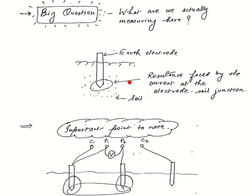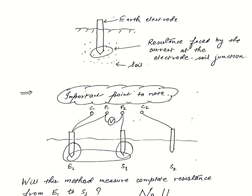So the important point to note is: the voltmeter is connected across E1 electrode and S1 spike. So will this method measure complete resistance from E1 to S1? Will it?